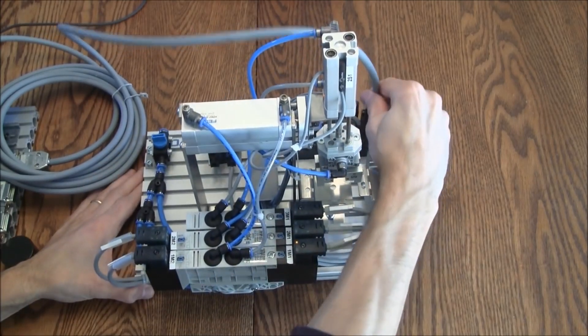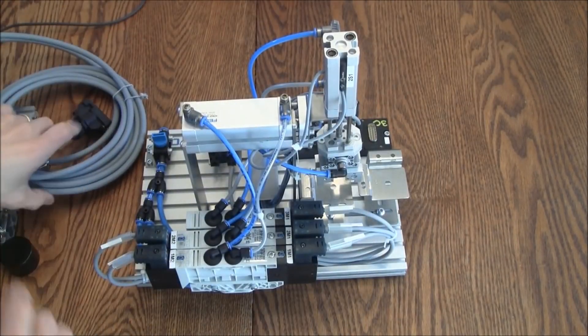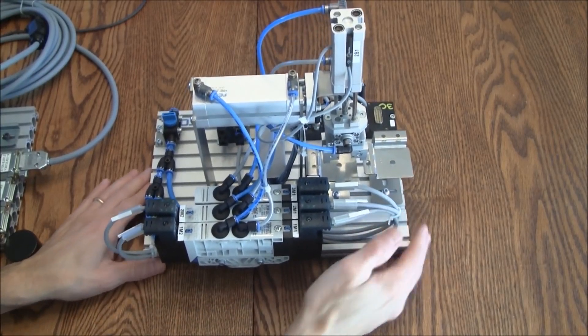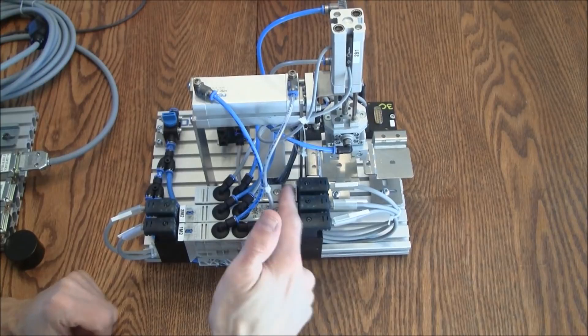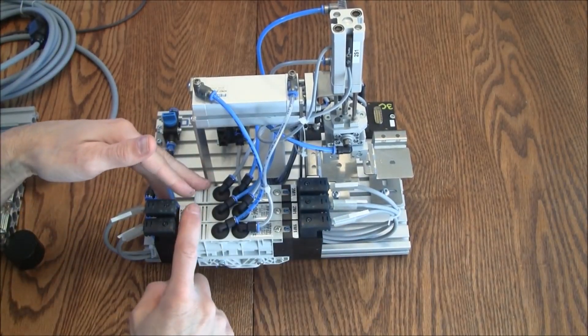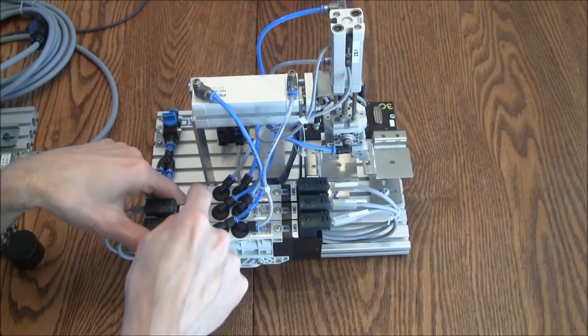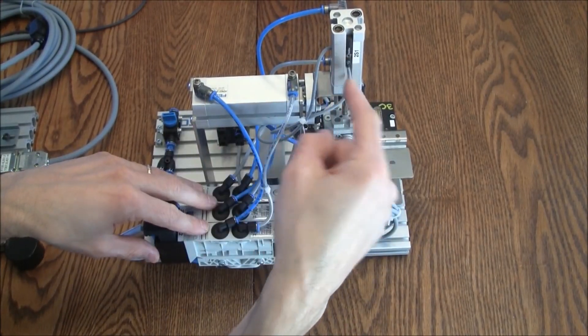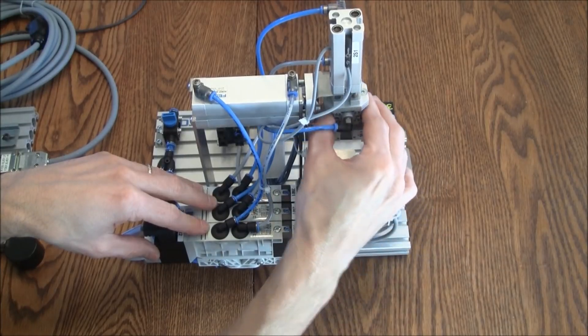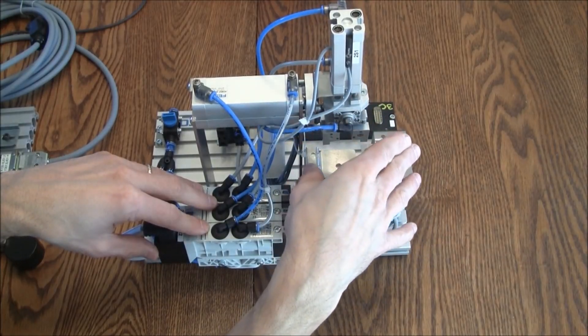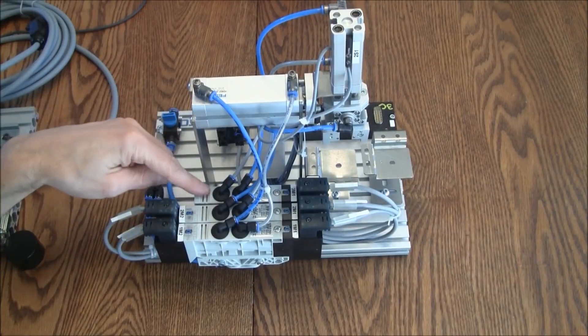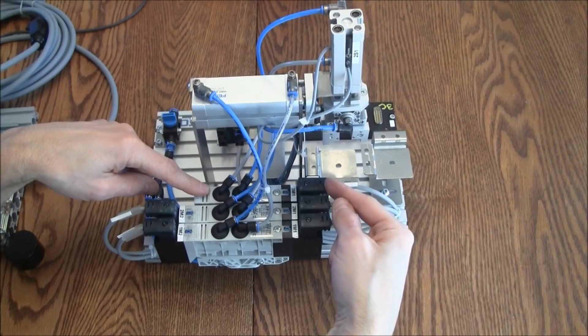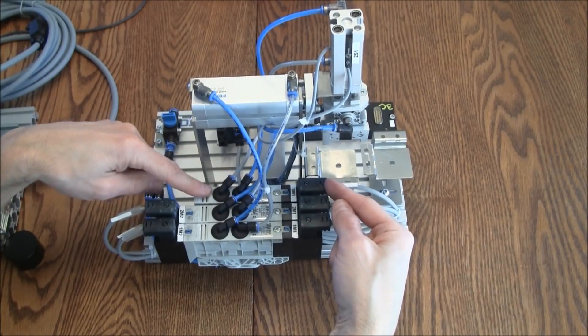You'll also see that we have valves. The valves are mixed. We have one that looks different from the other two. But we do have a total of three valves because we have three cylinders: the horizontal, the vertical, and the gripper is also a pneumatic cylinder. No sensors on it but it is a pneumatic cylinder. One of those cylinders is being controlled by this valve that has a single solenoid on it. It is a four two-way valve.